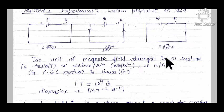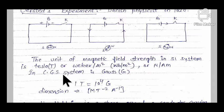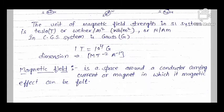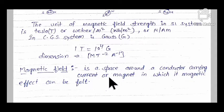The unit of magnetic field strength in SI unit is Tesla or Weber per meter square or Newton per ampere meter. In the CGS system, the unit is Gauss, and 1 Tesla equals 10⁴ Gauss. The dimension of magnetic field is M¹T⁻²A⁻¹. Magnetic field is the space around a conductor carrying current or a magnet in which its magnetic effect can be felt.